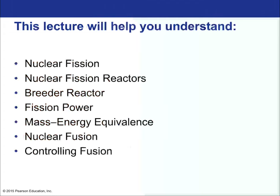In the last lecture, we talked about transmutation. Transmutation was primarily because of alpha particle and beta particle decay — having two protons and two neutrons leave, or having one electron leave the atomic nucleus, thus changing the element. We also talked about stimulated transmutation, like through neutron bombardment.